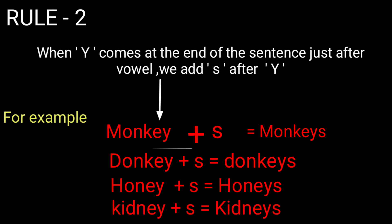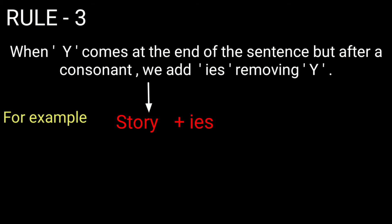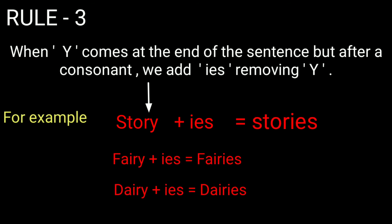Rule three: when you find 'y' at the end but there is a consonant before it, not a vowel, you should remove 'y' and add 'ies'. For example, story has a consonant before 'y', so it becomes stories. Similarly, fairy becomes fairies and dairy becomes dairies.